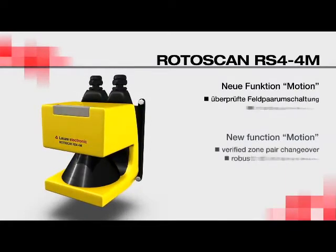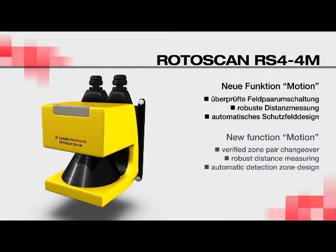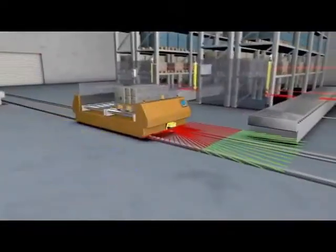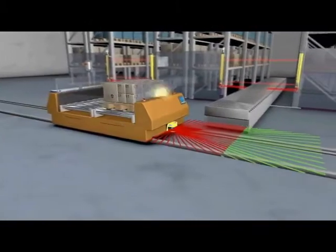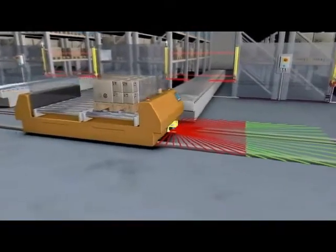This applies to the verified zone pair changeover, the robust distance measuring, and the automatic detection zone design. A transfer trolley with RS4-4M safety laser scanners in both moving directions travels to diverse loading and unloading stations in the transfer area of a high bay warehouse.